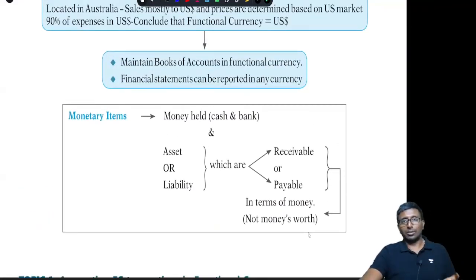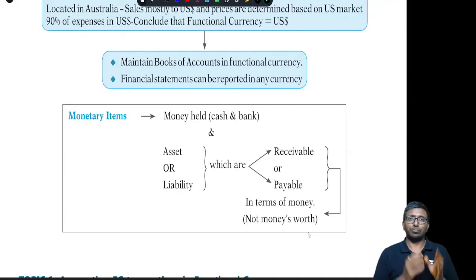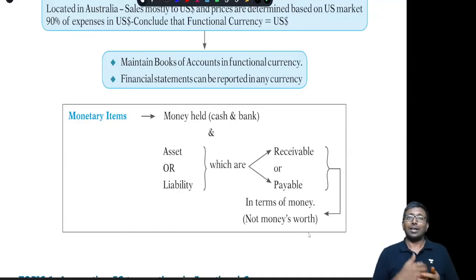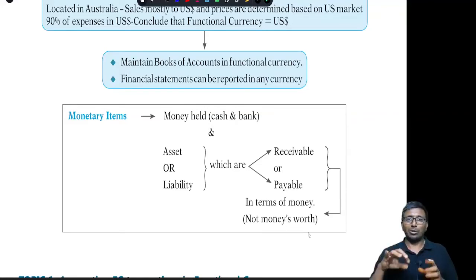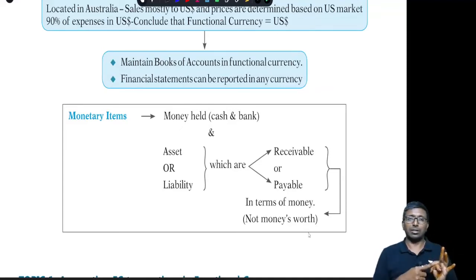You are supposed to maintain books of accounts in functional currency; otherwise, every transaction you would have to convert, which would be hectic. The next important definition is monetary items. A monetary item means money held — that is, cash and cash equivalents — and assets or liabilities which are receivable or payable in money, not money's worth. These assets or liabilities are measurable — either they are fixed or determinable. Determinable simply means measurable.